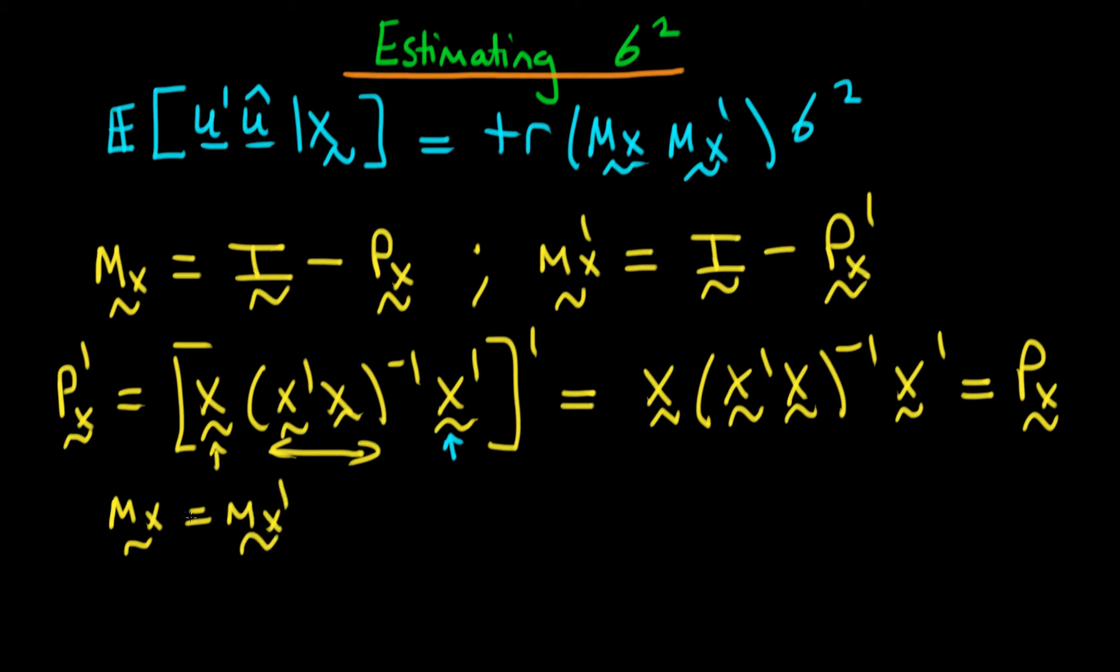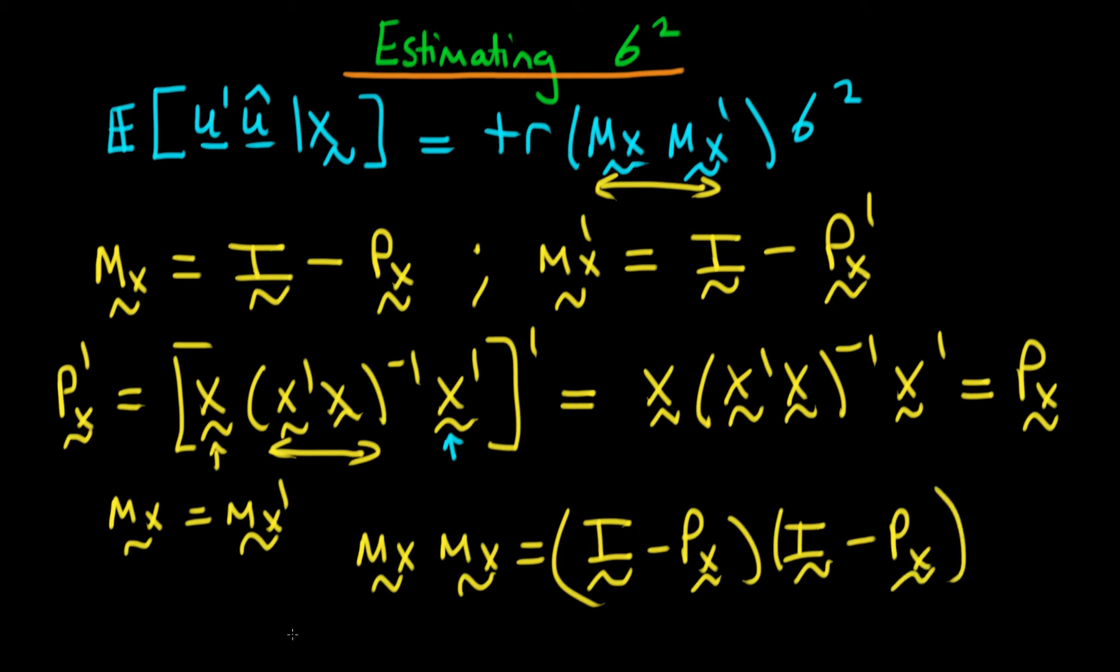Okay, so that's helpful, but this expression here is essentially mx times itself. So what does that actually equal? mx times mx is just equivalent to i minus px times i minus px. If you multiply this out, our first term is i times i, which is just i, then the next term is i times px, which is just px.